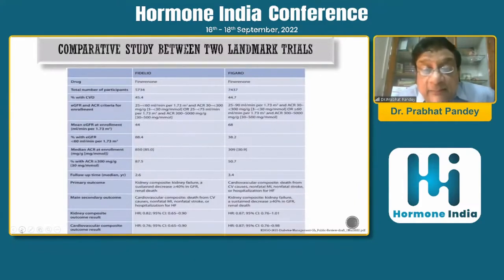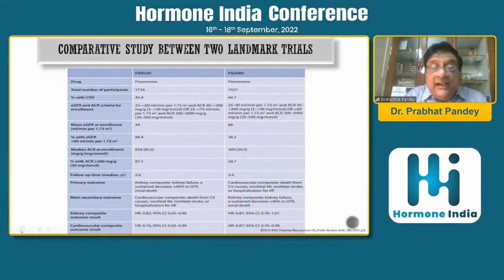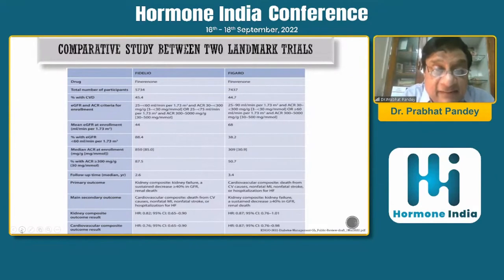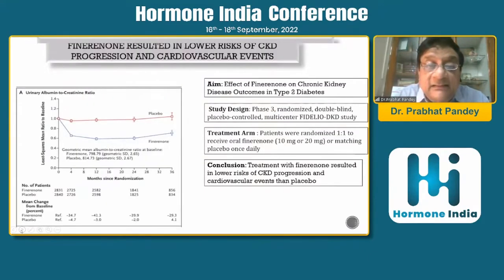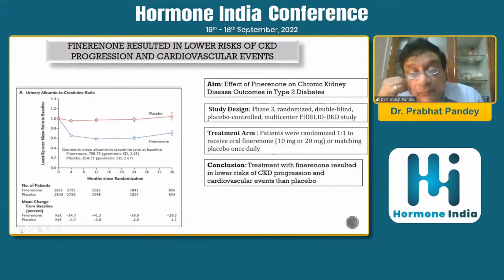This is a comparative study between the two landmark trials — FIDELIO and FIGARO. Both trials have shown benefit in diabetic control and cardiovascular outcomes. Both have been found to be kidney-friendly and cardiovascular-friendly. The FIDELIO trial showed much better effects on the kidneys, while the FIGARO trial showed much improved effects on the cardiovascular outcome. The conclusion from FIDELIO-DKD was that finerenone resulted in lower risk of CKD progression and cardiovascular events compared to placebo, at a dose of 10 mg increasing to 20 mg.